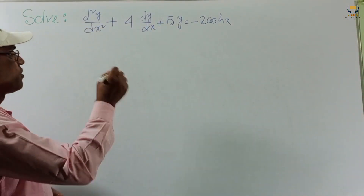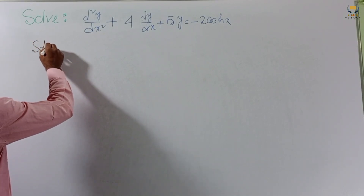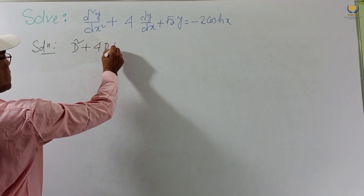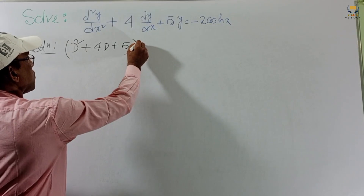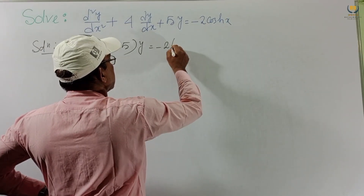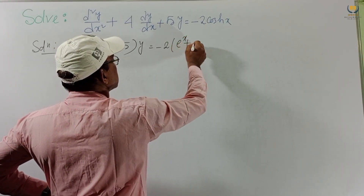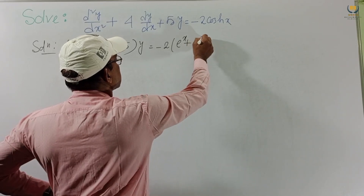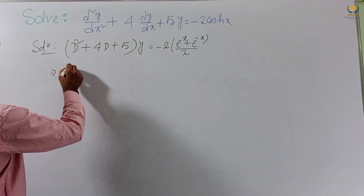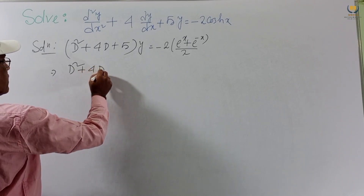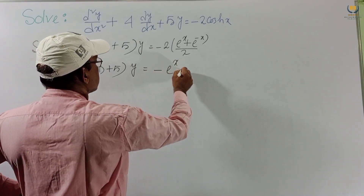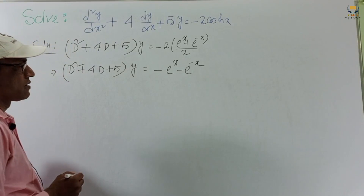Now consider Problem 2: solve d²y/dx² + 4dy/dx + 5y = -2 cosh(x). We write (D² + 4D + 5)y = -2 cosh(x). Since cosh(x) = (e^x + e^(-x))/2, multiplying by -2 gives -(e^x + e^(-x)). So (D² + 4D + 5)y = -(e^x + e^(-x)).